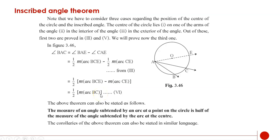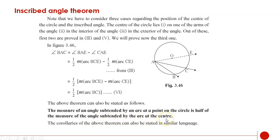The above theorem can also be stated as follows: the measure of an angle subtended by an arc at a point on the circle is half of the measure of the angle subtended by the arc at the center.